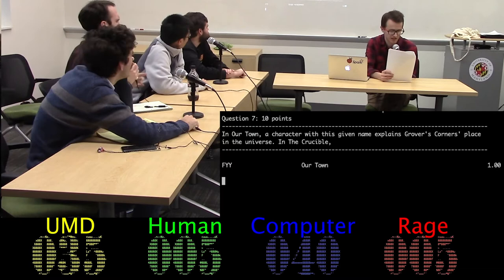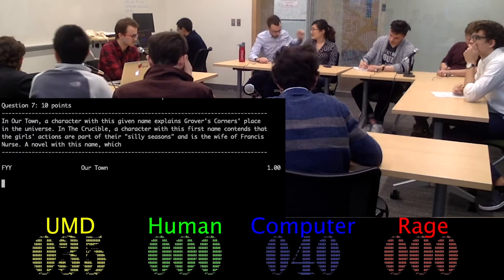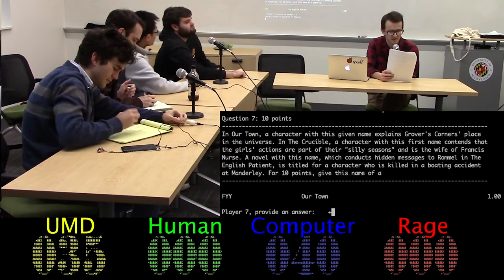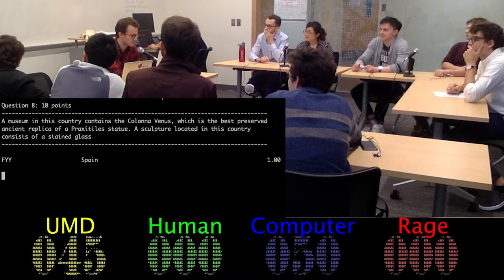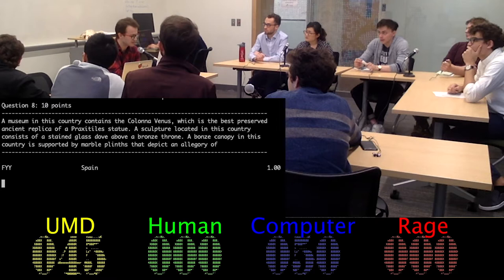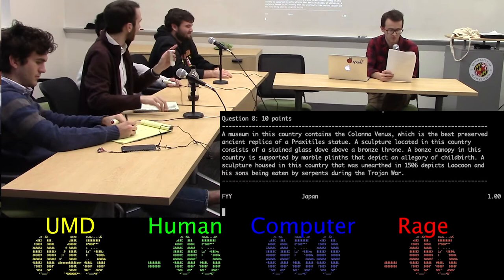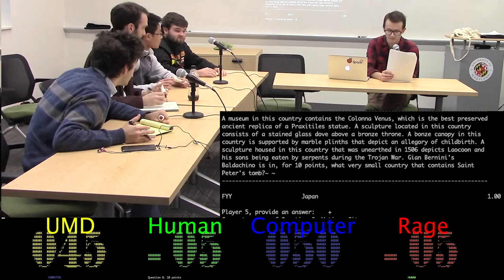Toss-up seven. In Our Town, a character with this given name explains Grover's Corner's place in the universe. In The Crucible, a character with this first name contends that the girl's actions are part of their silly seasons. Neg five. And is the wife of Frances Nurse. A novel with this name, which conducts hidden messages to Rommel in The English Patient, is titled for a character who is killed in a boating accident at Manderley. For ten points, give this name of a Daphne du Maurier gothic novel, which is Rebecca. Ten points. Toss-up eight. A museum in this country contains the Colonna Venus, which is the best preserved ancient replica of a Praxiteles statue. A sculpture located in this country consists of a stained glass dove above a bronze throne. A bronze canopy in this country is supported by marble plinths that depict an allegory of childbirth. A sculpture housed in this country that was unearthed in 1506 depicts Laokoan and his sons being eaten by serpents during the Trojan War. John Bernini's Baldacchino is in. For ten points, what very small country that contains St. Peter's tomb? Vatican City. Ten points.